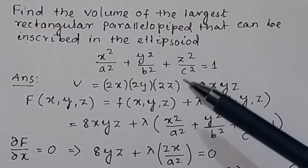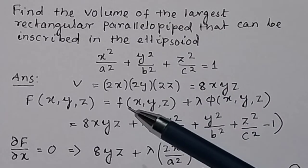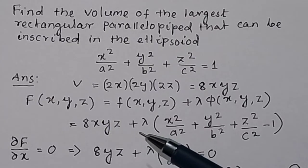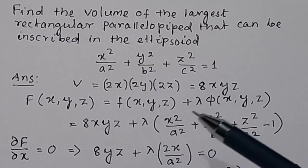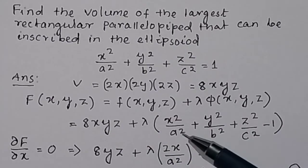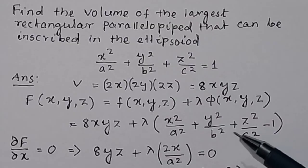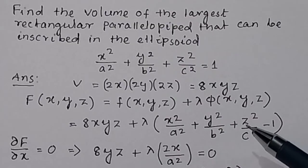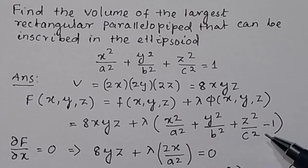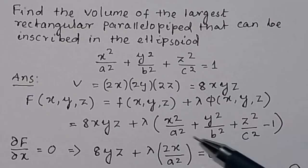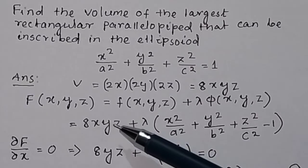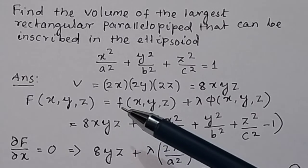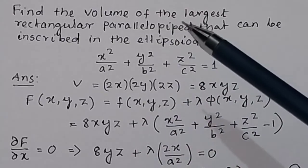So the full function is F = 8xyz + λ(x²/a² + y²/b² + z²/c² − 1). We can find the maximization condition for the volume of the largest rectangular parallelepiped by taking the partial derivatives of the function.